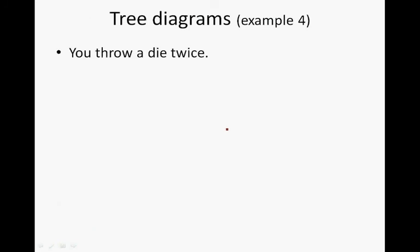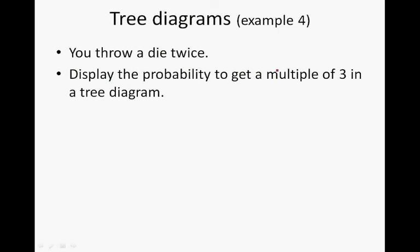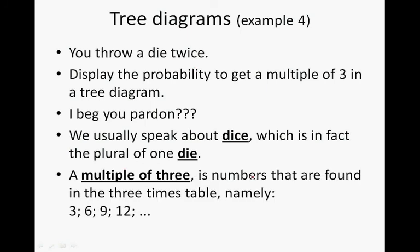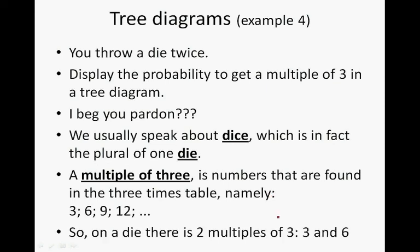Example 4: You throw a die twice. Display the probability of getting a multiple of 3 in a tree diagram. Note: 'dice' is the plural; one die, two dice. A multiple of 3 is a number found in the three times table — namely 3, 6, 9, 12. On a die, there are two multiples of 3: 3 and 6.